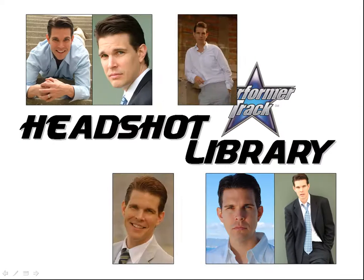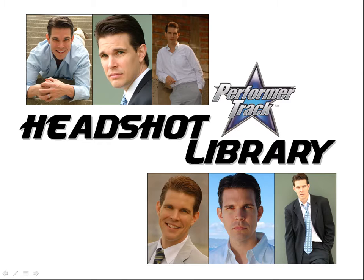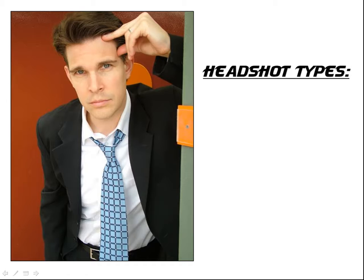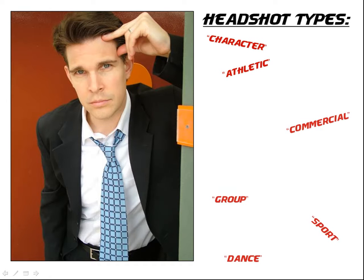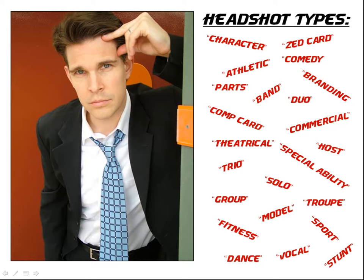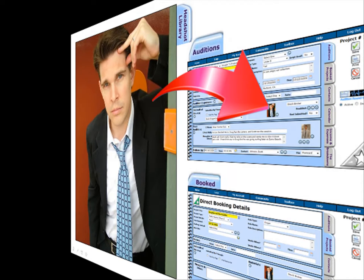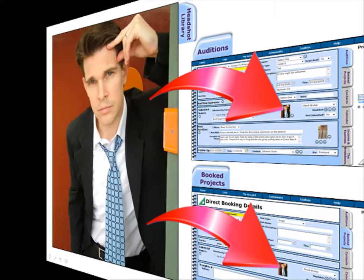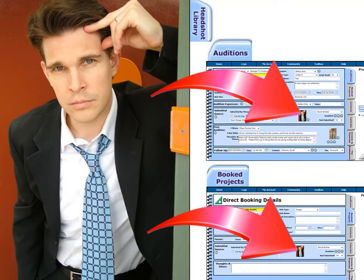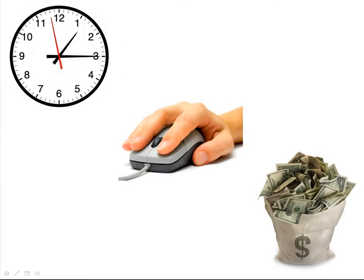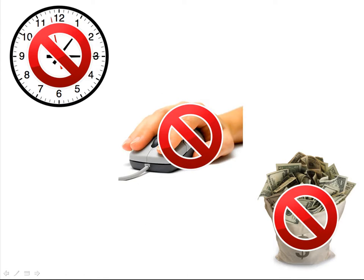Let's continue with this quick start guide tutorial by delving into the headshot library. Now don't let the name fool you — you can put more than just headshots in here. The headshot library is where you will upload any images you use to promote yourself when doing submissions in order to get audition opportunities and direct bookings. The images you place into the headshot library will show up in your auditions and direct booking forms. The aim is to enable you to see which pictures get you in the door most often, and ultimately stop wasted time, energy, and money on submitting pictures that do not work for you — only submit pictures that are effective for your business.